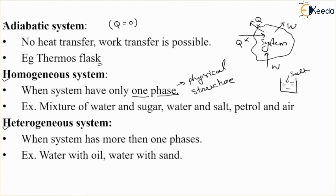Next is heterogeneous system, which is just opposite to homogeneous system — when the system has more than one phase. For example, a mixture of water and oil: because of density difference we can easily discriminate between water and oil, with oil on the upper surface. Similarly, water and sand — because of density difference we can discriminate between them. Water and oil, water and sand are considered heterogeneous systems because they have more than one phase. Diesel can also be considered as a heterogeneous mixture.